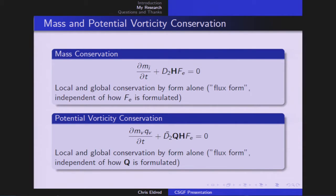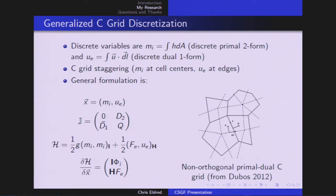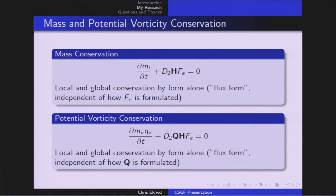Let's look at these various conservation properties. If you go through and you work out the evolution equation for the mass using this system, you end up with this equation here. This is nice because it's in what's called flux form. So D2 is a discrete divergence operator. That means that we're going to have mass conservation. So both local and global conservation of mass by form alone, independent of how F of E ends up being formulated. You can work the same thing out for the potential vorticity. D2 is now the discrete curl operator. But again, this is written in flux form. So we're going to get local and global conservation by form alone, independent of how Q ends up being formulated.